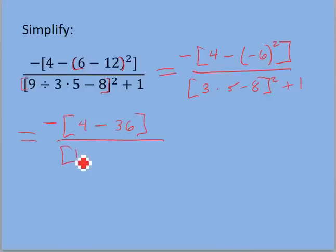So, we're going to multiply those together. So, 3 times 5 gives us 15. Minus 8 stays the same. We're squaring that bracket. Plus 1.